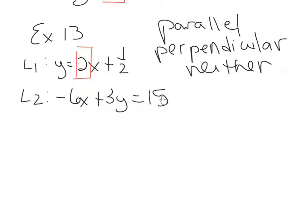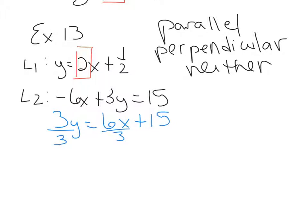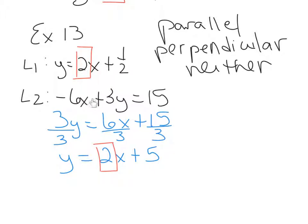Now we can see the slope of line 2 is also 2. For lines to be parallel, they have to have the same slope. Both lines have a slope of 2, so these lines are parallel.